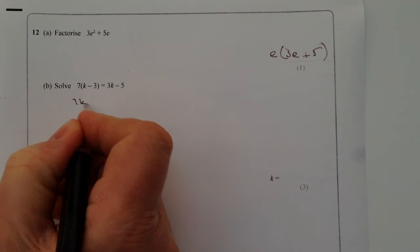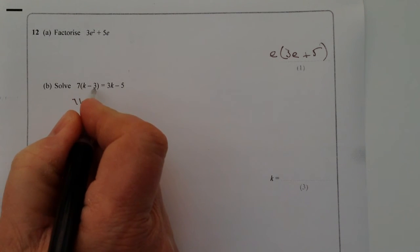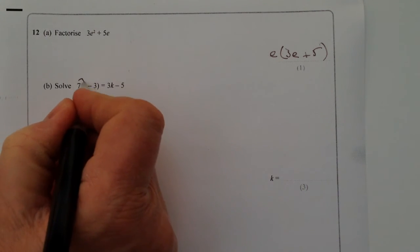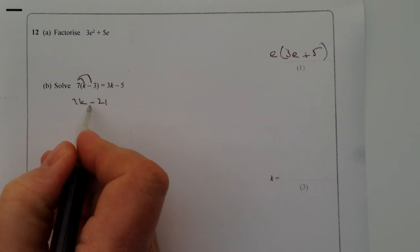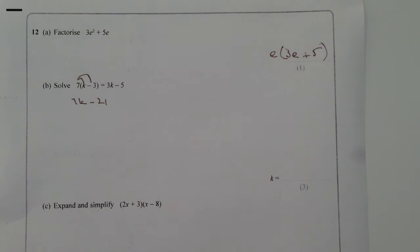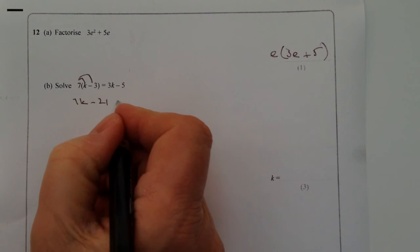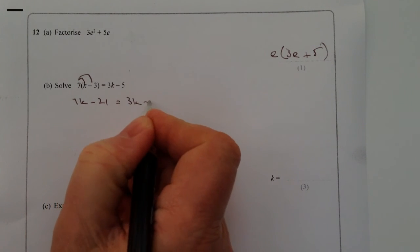So let's just multiply out the brackets first. I'm going to get 7k minus 21, because 7 times k is 7k, and then 7 times minus 3 is minus 21. Do be very careful about minuses in these types of questions. And that's going to be equal to 3k minus 5.